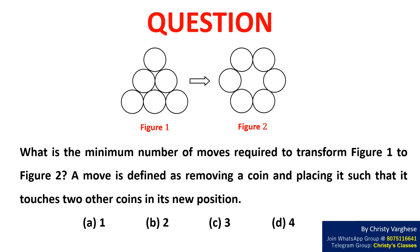In this video, let us find the minimum number of moves required to transform one figure into another. What is the minimum number of moves required to transform figure 1 to figure 2? A move is defined as removing a coin and placing it such that it touches two other coins in its new position. Options: A) 1, B) 2, C) 3, and D) 4.